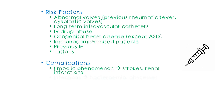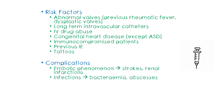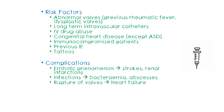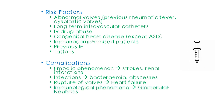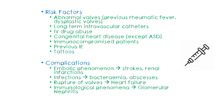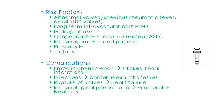Infective endocarditis gives rise to many sequelae. Embolization causes infarction and distant abscess formation. It can also cause rupture of valves leading to acute severe incompetence and heart failure. Another complication is glomerulonephritis, where the glomeruli of the kidneys become clogged with immune complexes that form as a defense mechanism to the infection. All these have to be inquired about in the history.